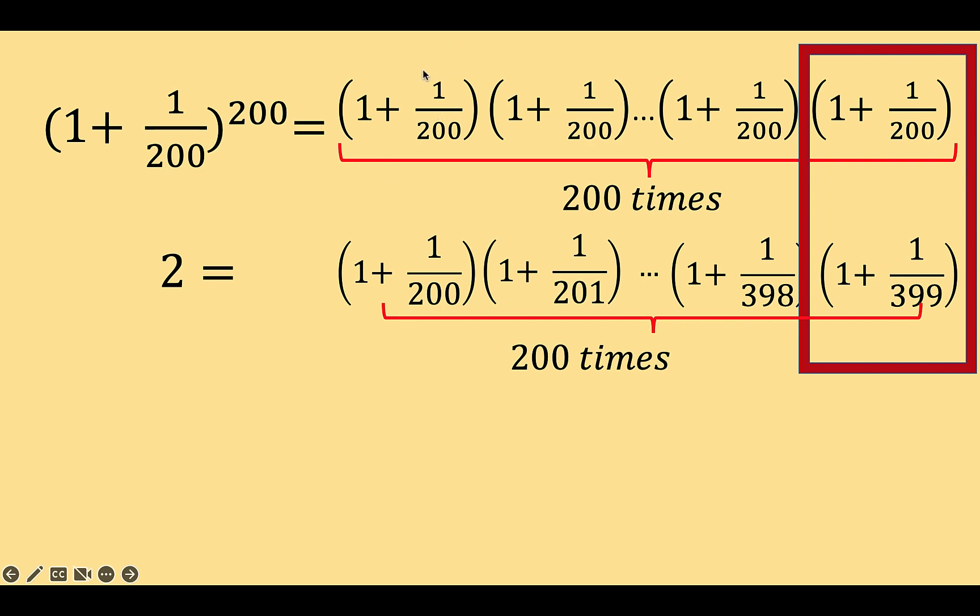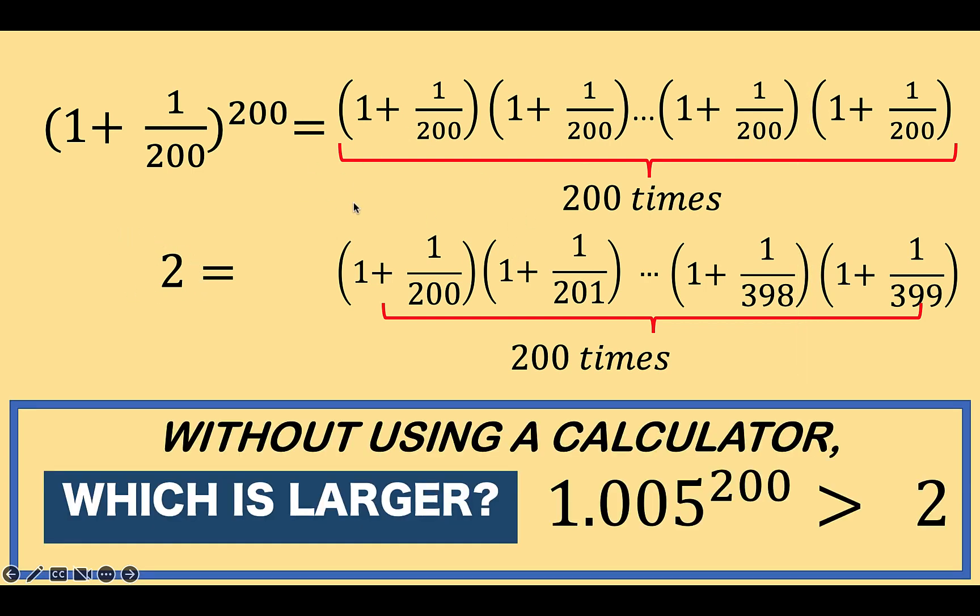So except for the first pair here, all the corresponding factors of the expansion of 1 plus 1 over 200 raised to 200 are greater than the corresponding factors of 2. And so our conclusion is even without using a calculator, we are sure that 1.005 raised to 200, which are equivalent to these 200 factors, must be greater than 2, which is equivalent to these 200 factors at the bottom.